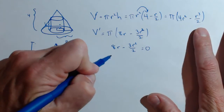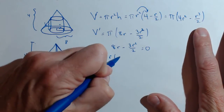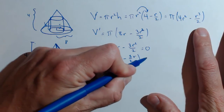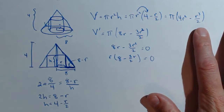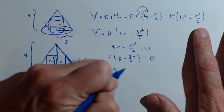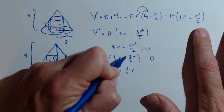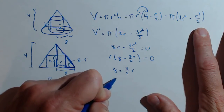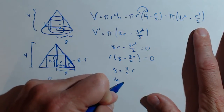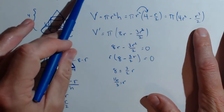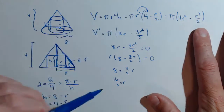We can factor an r out of there. So r equals zero is a critical point, but it's not that critical to us — if r is zero there is no cylinder. So here's the one we're interested in: we set 8 equals 3 over 2 times r, and solving for r gives us r equals 16 over 3, in whatever units we're working in.